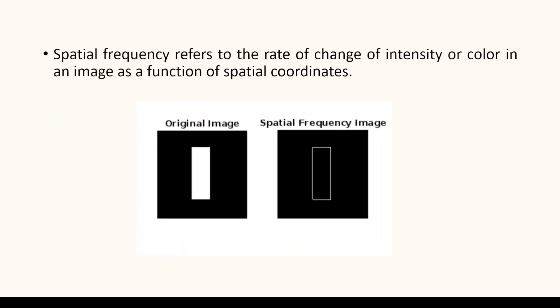In the context of images, spatial frequency refers to the rate of change of pixel intensity values across space. It characterizes how rapidly the pixel values change from one region of the image to another. A higher spatial frequency indicates more rapid changes in intensity, while a lower spatial frequency represents slower changes. In simpler terms, spatial frequency relates to the level of detail or the size of structures present in an image. High frequency components correspond to fine details like edges and textures, and low frequency components represent smooth variations such as overall brightness or large-scale structures.